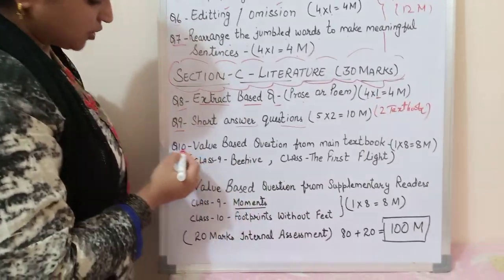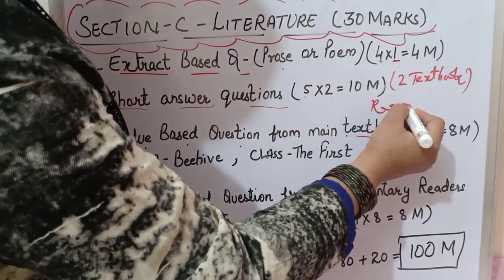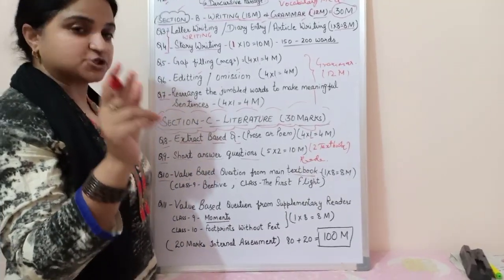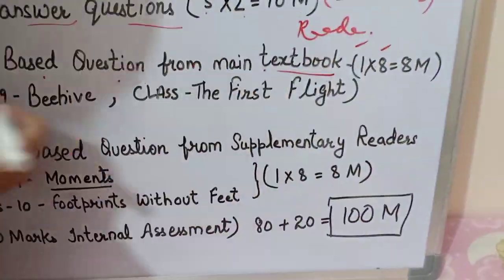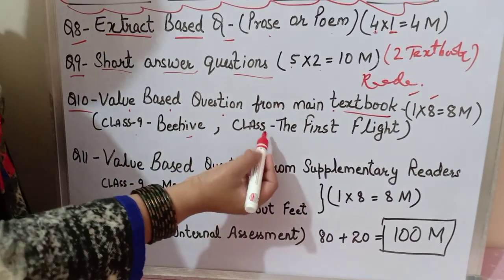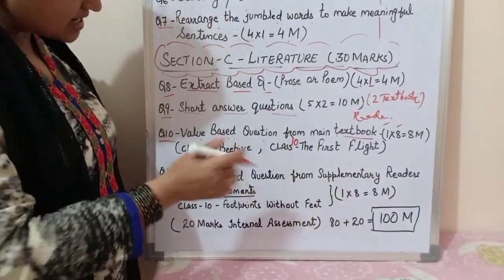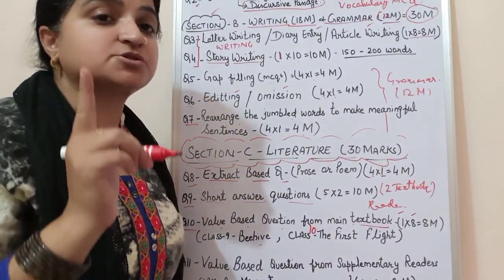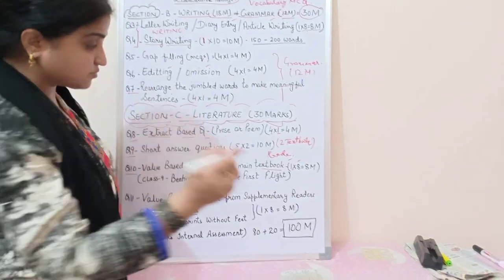Question number ten is a value-based question from the main textbook — the main reader. Two questions are given and you have to attempt only one. It carries eight marks. For class 9, the main reader is Beehive, and for class 10 it is First Flight. Students should be careful — two questions are given with a choice, but you have to attempt only one, and the weightage is eight marks.